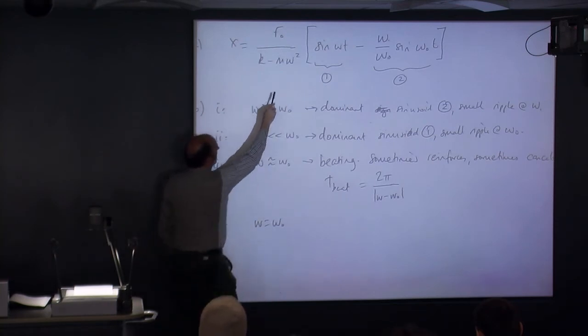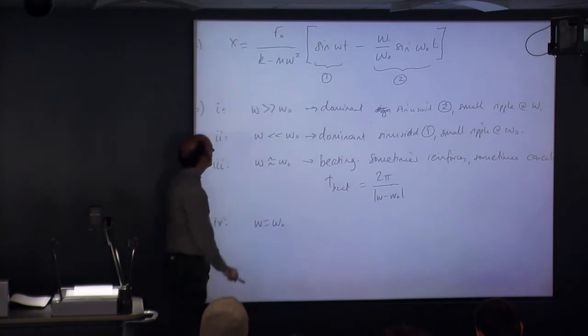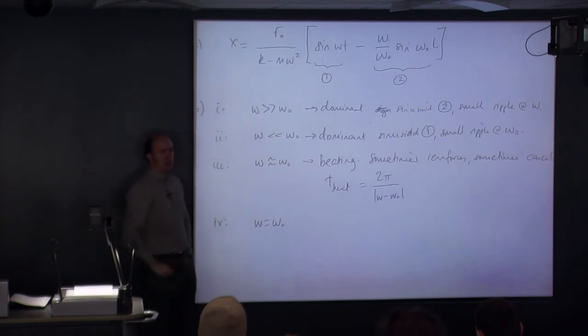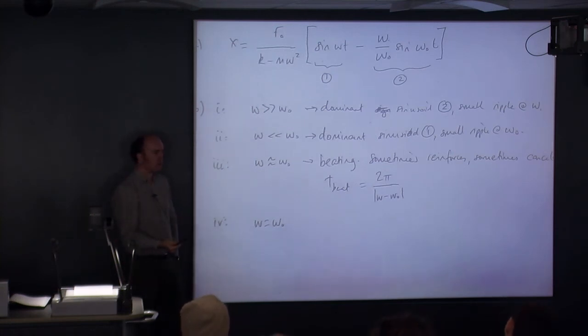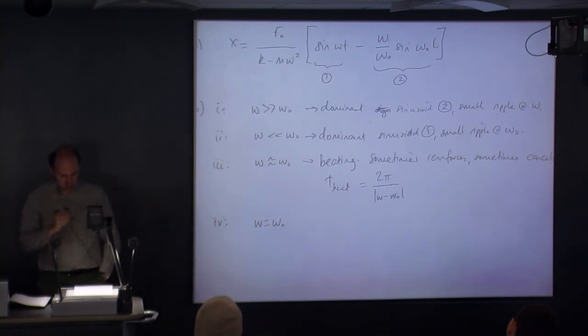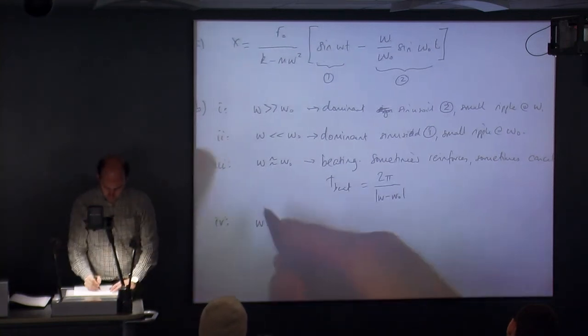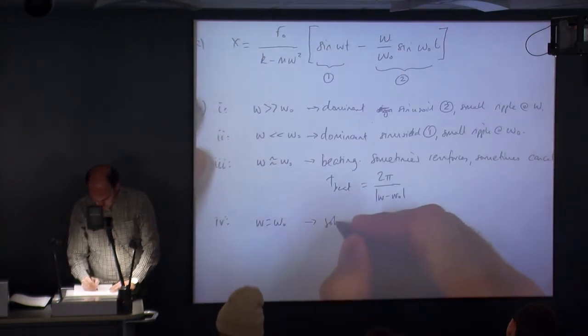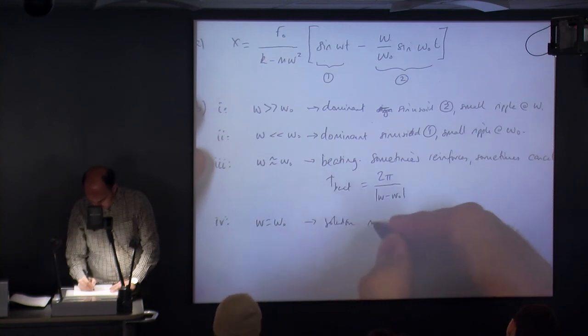Because what happens to k minus m omega squared? Well, that means that omega here is root k upon m. So omega squared is k upon m. The m's will cancel. You end up with k minus k in the solution in the denominator. And obviously, that doesn't work. The thing will go to infinity, which isn't what necessarily happens. Well, this is what happens when you've got an undamped system. So, solution not valid.